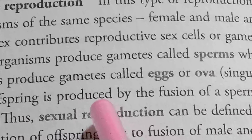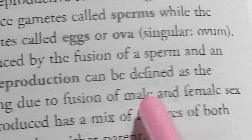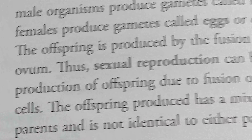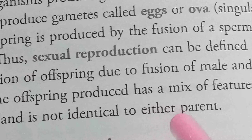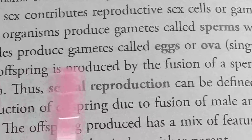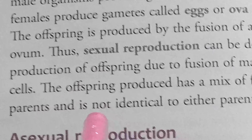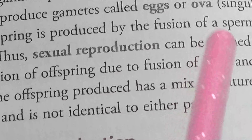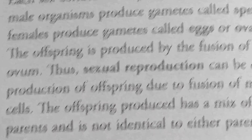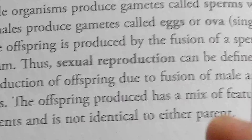The offspring is produced by the fusion of sperm and an ovum. Thus sexual reproduction can be defined as the production of offspring due to fusion of male and female sex cells. The offspring produced has a mix of features of both parents and is not identical to either parent — the offspring can have some changes and is not a total copy.